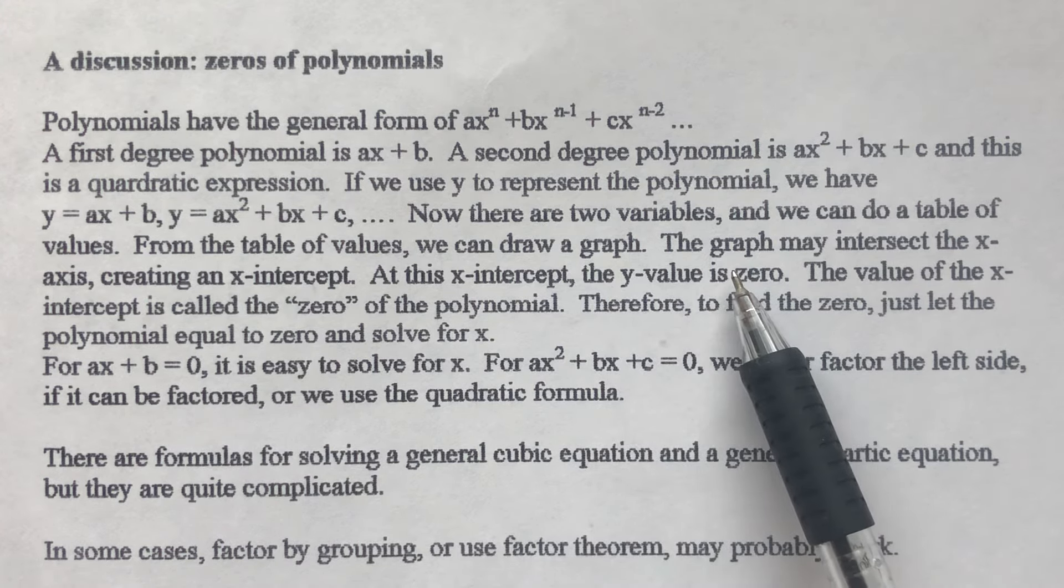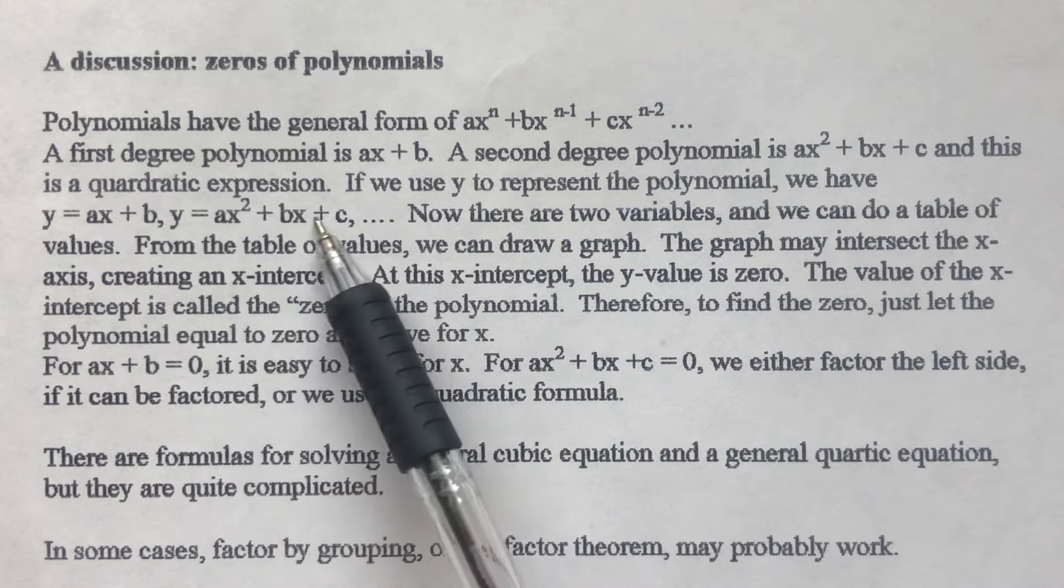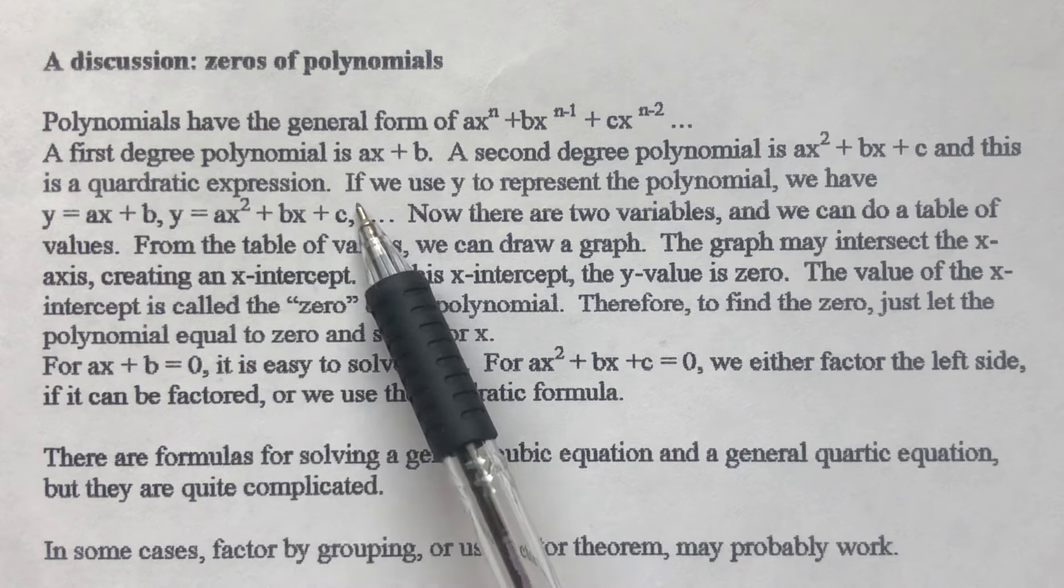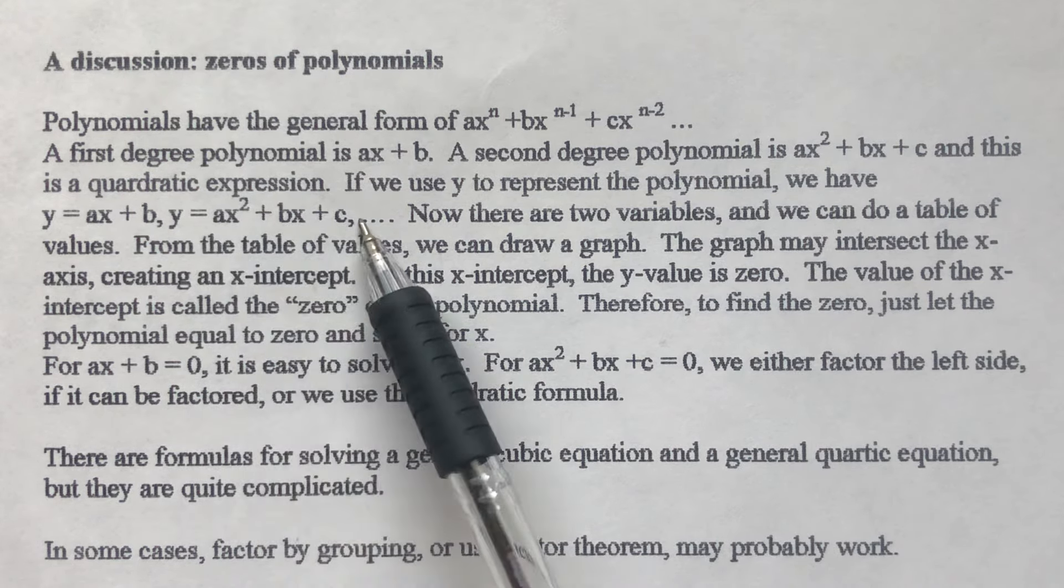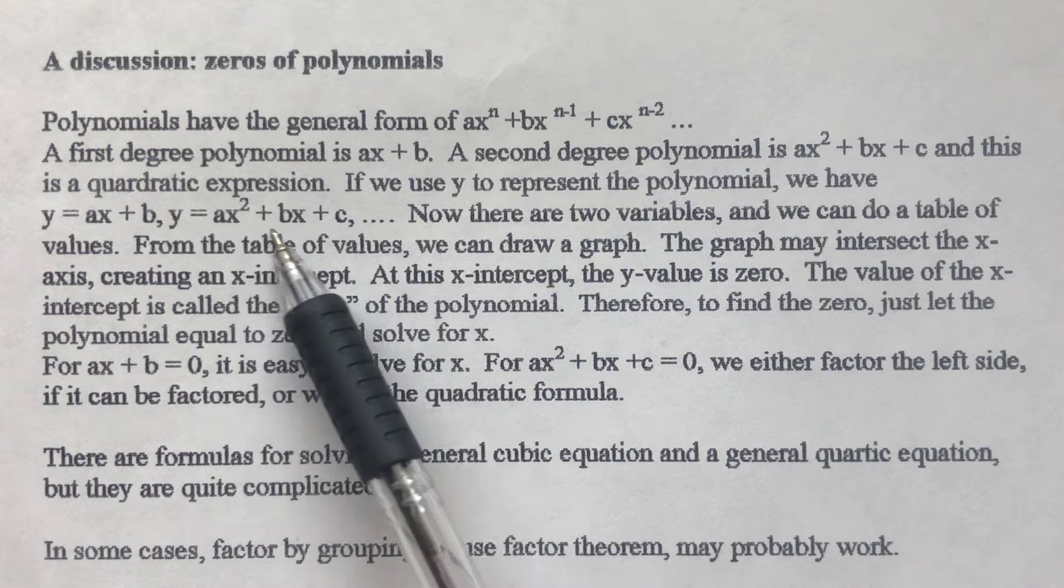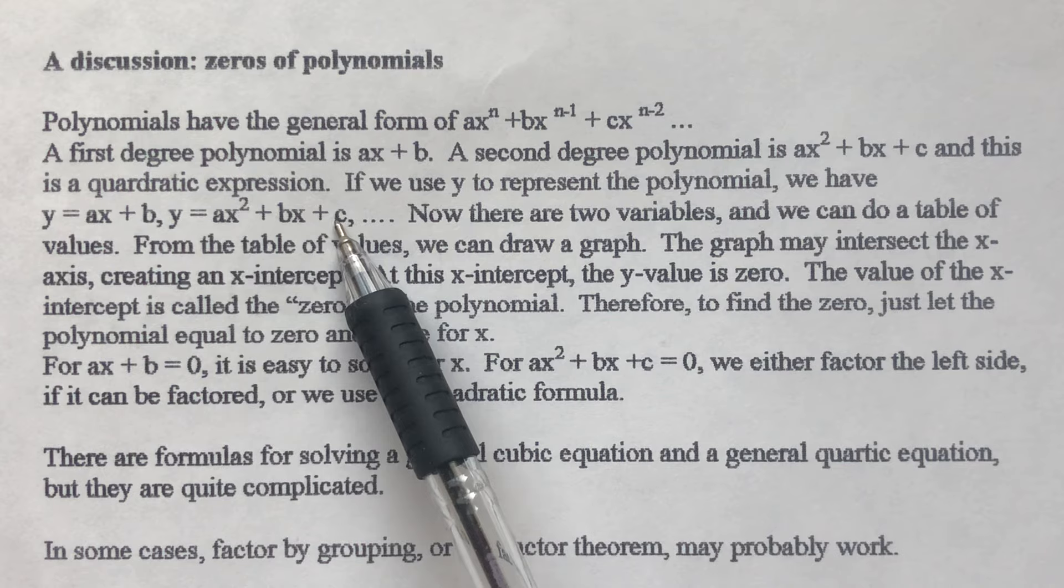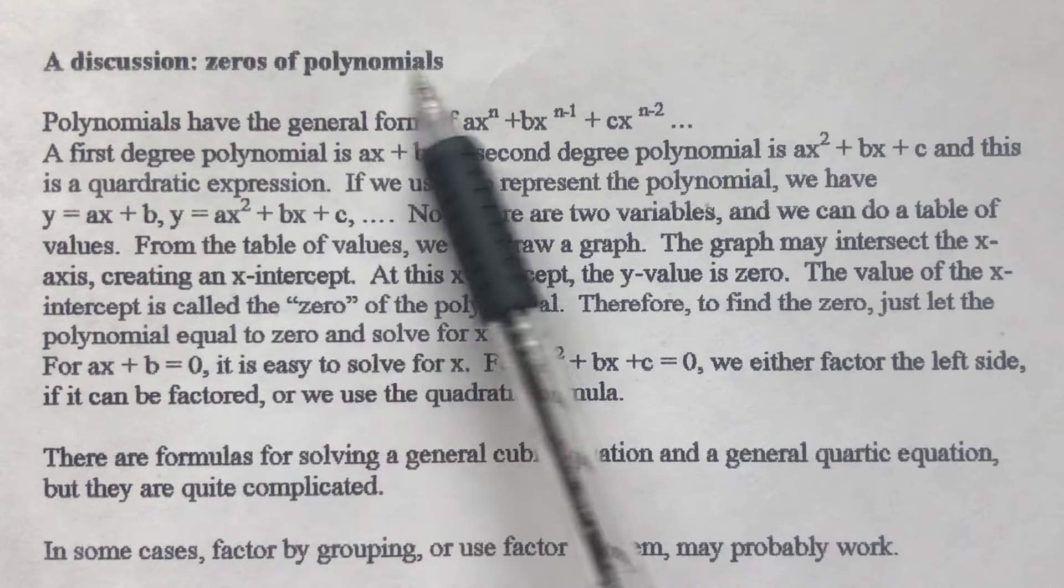Because the y-value is zero, look here. The right-hand side is zero. But the right-hand side is a polynomial. So at the x-intercept, the polynomial is zero. So that's what we mean by zeros of the polynomial.